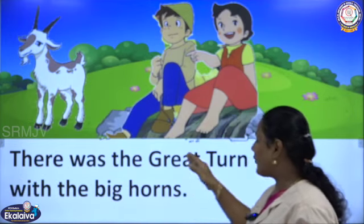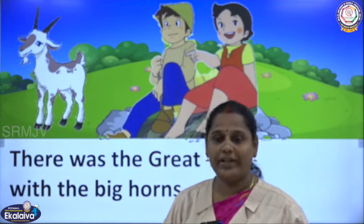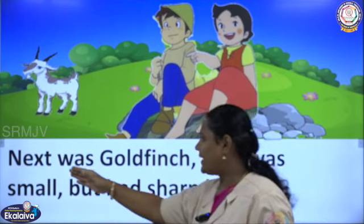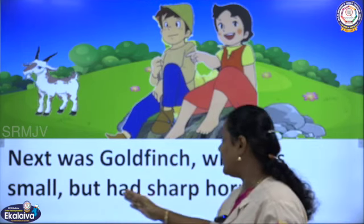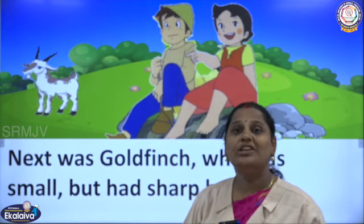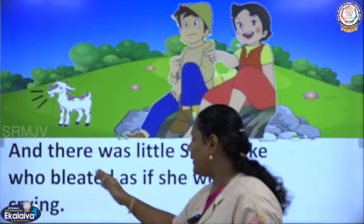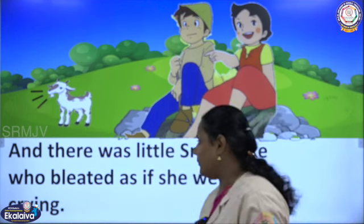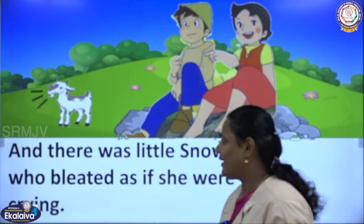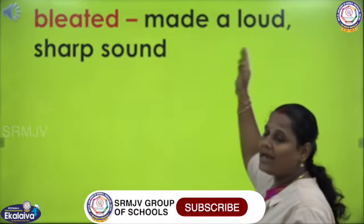There was the great turn with the big horns. He told her the one with big horns was great turn. Next was Goldfinch, who was small but had sharp horns. And there was little Snowflake, who bleated as if she were crying. A little Snowflake made a loud sound as if she was crying. Bleated means made a loud sharp sound.